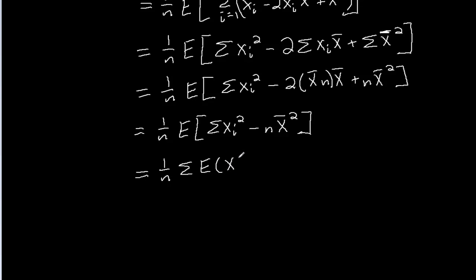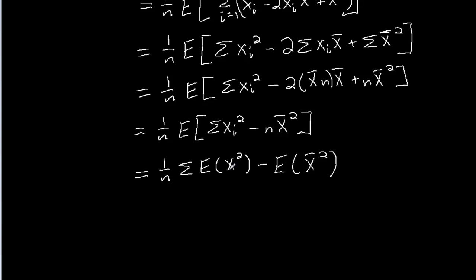Now each of these xᵢ's is a copy of some random variable. We're making n observations, and xᵢ is the ith observation; the random variable x is the one representing all of those. So we have the expectation of x squared, minus 1 over n times n — the n's cancel — and we just get the expectation of x̄ squared. Notice that the expectation of x squared does not depend on the subscript i, so when I add these up, I'm adding n identical terms. This will be n times the expectation of x squared, multiplied by 1 over n, so we just have E[X²] minus E[x̄²].